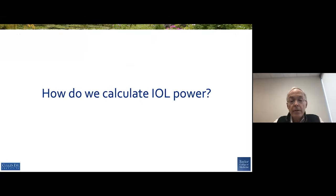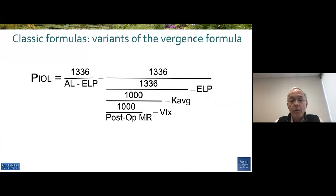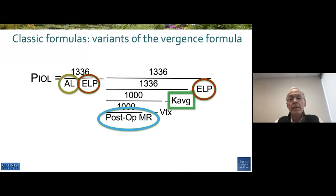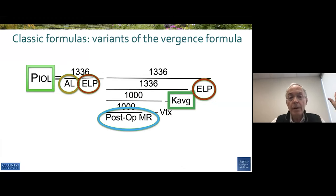So how do we calculate IOL power? The classic formulas are a sort of divergence formula where you enter the post-op refraction you desire, the average corneal power, the axial length. Each formula will have its own internal formula for calculating the effective lens position, and it spits out the IOL power that you would then implant in the patient and hope that you hit your target.